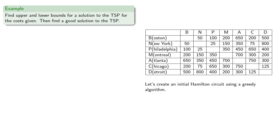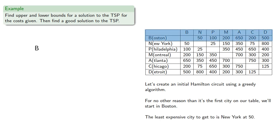So let's create an initial Hamilton circuit using a greedy algorithm. For no other reason than it's the first city on our table, we'll start in Boston. The least expensive city to get to is New York at 50.